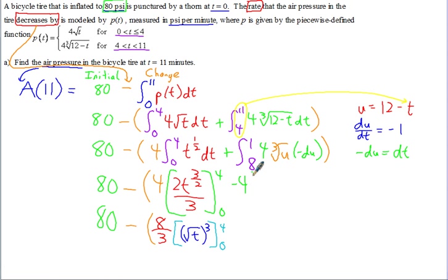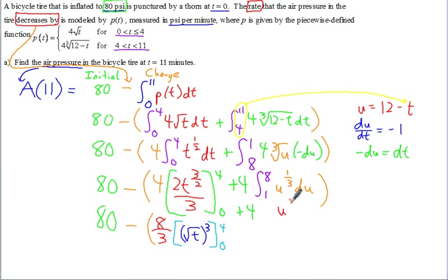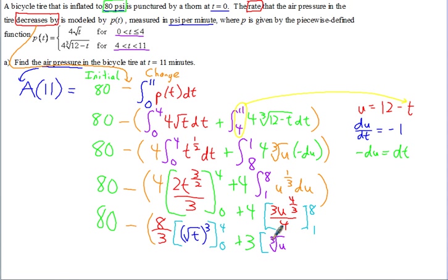Notice the lower and upper limits are in the wrong order. We can flip those and change the sign — so rather than negative, that switches to positive, and it becomes an integral from 1 to 8. We rewrite this as u to the 1/3 du. Now we integrate: u to the 1/3 gives u to the 4/3 times 3/4, evaluated from 1 to 8. Pulling out the 3/4 cancels with the 4, leaving plus 3 on the outside. In radical form, u to the 4/3 is the cube root of u to the 4th.